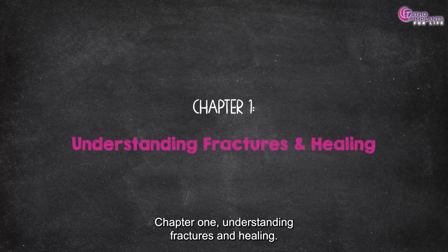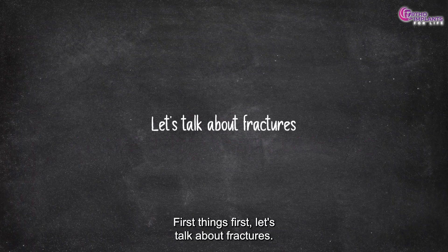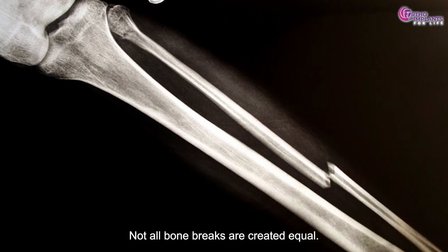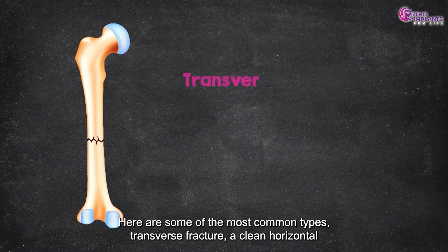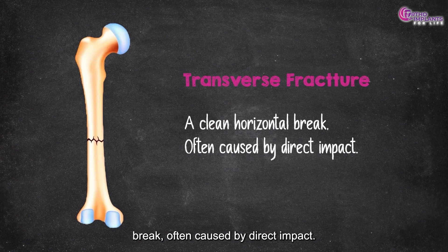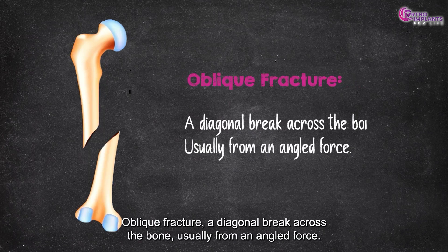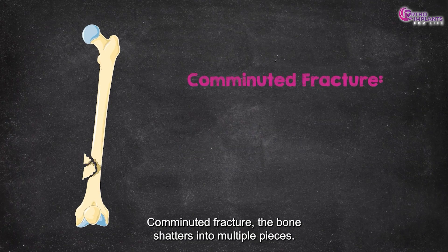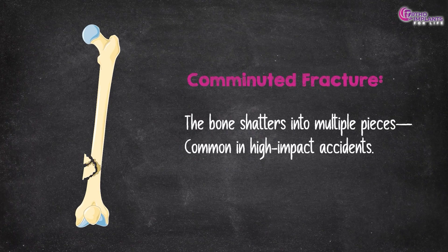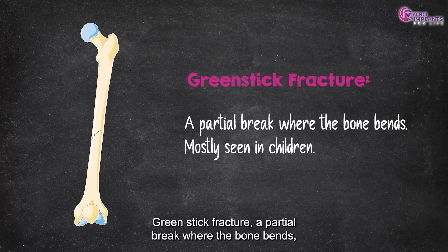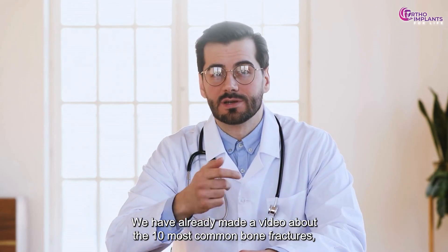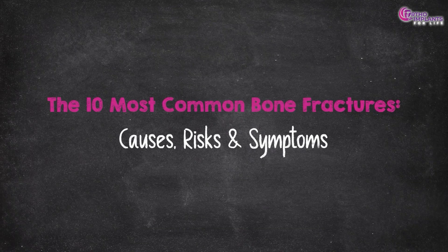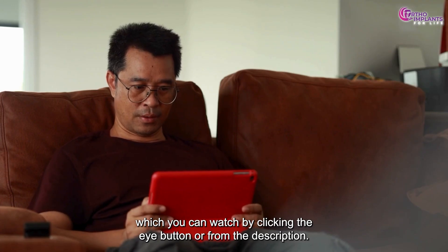Chapter 1: Understanding Fractures and Healing. Let's talk about fractures — not all bone breaks are created equal. Here are some of the most common types: Transverse Fracture, a clean horizontal break often caused by direct impact; Oblique Fracture, a diagonal break across the bone usually from an angled force; Spiral Fracture, a twisted break often seen in sports injuries; Comminuted Fracture, where the bone shatters into multiple pieces, common in high-impact accidents; and Greenstick Fracture, a partial break where the bone bends, mostly seen in children. We have already made a video about the 10 most common bone fractures, which you can watch by clicking the i button or from the description.